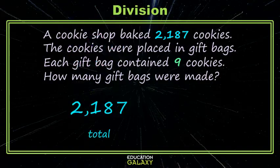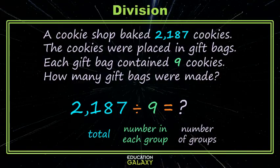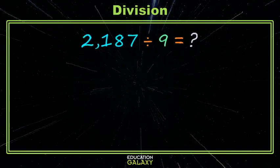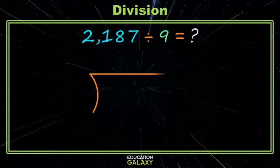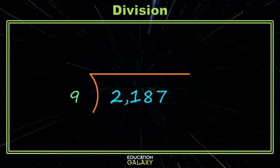So we start with a total and then we're separating it into groups of the same size and we want to know how many groups we're making. So let's set up our division. We put our division sign with our total underneath and the number we're dividing by on the outside.